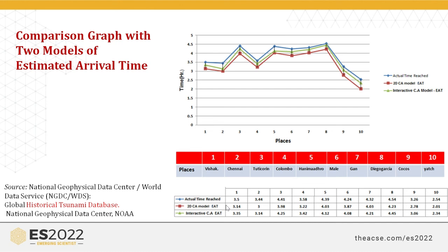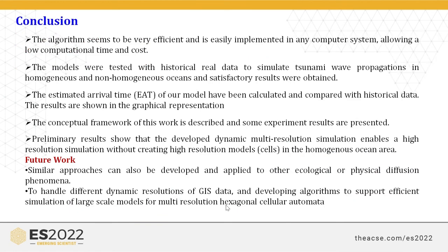In conclusion, the algorithm is very efficient and easily implemented in a computer system, allowing low computational time and cost. The models were tested with historical real data to simulate tsunami propagation in both homogeneous and non-homogeneous versions, obtaining satisfactory results. The estimated arrival time of the four models was calculated and compared with historical data with graphic representation. The framework also presents the primary results, developing dynamic resolution to enable high-resolution simulation without creating a high-resolution model in the homogeneous version area. Future work includes developing another model based on GIS data and a developer algorithm to support efficient simulation of a larger-scale multi-resolution hexagonal cellular automata model.